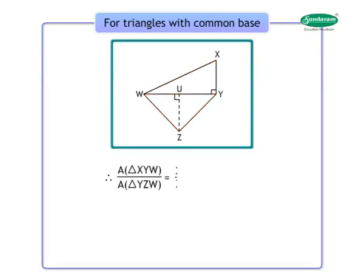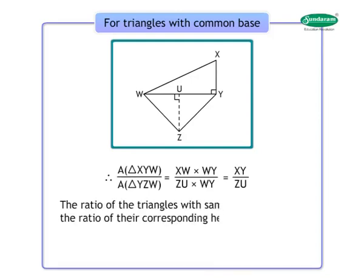Therefore, area of triangle XYZ upon area of triangle ZWY is equal to XW into WY upon ZU into WY, which equals XW upon ZU. Hence, the ratio of the areas of triangles with the same base is equal to the ratio of their corresponding heights.